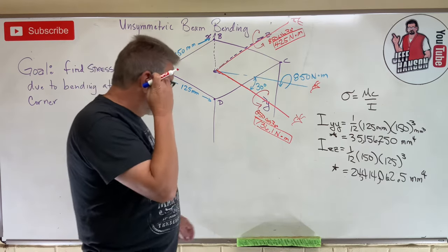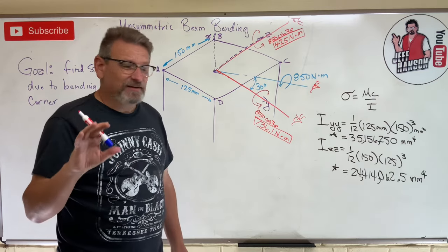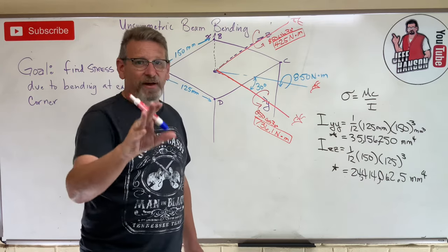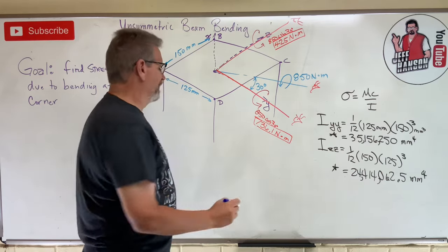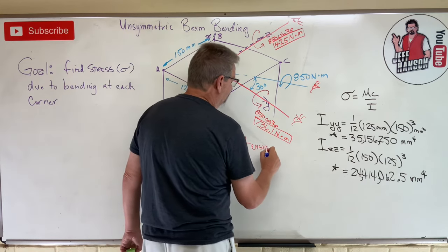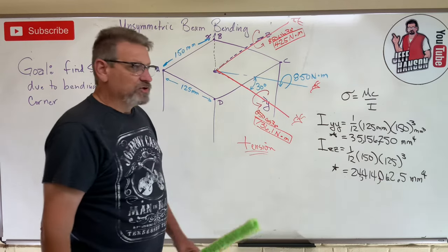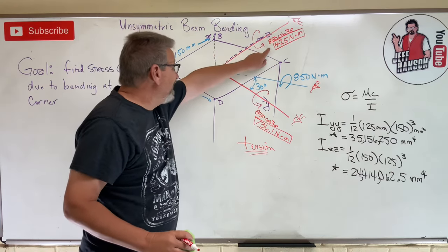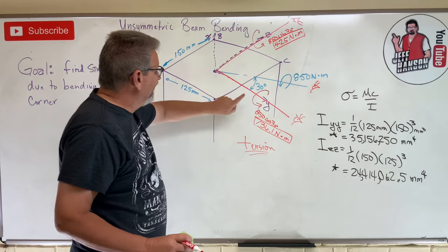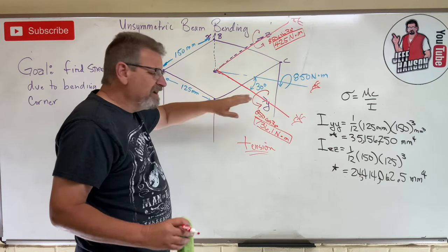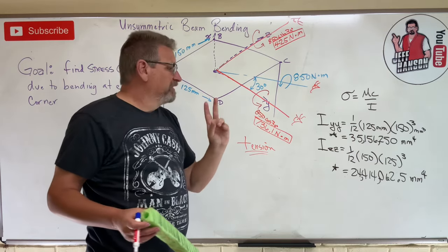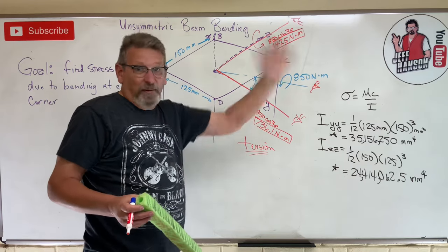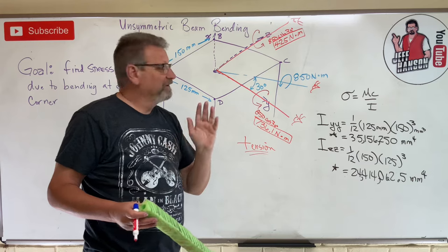Let's talk about what these things are doing. When stress is in compression, it's a negative value. When stress is in tension, it's a positive value — what does the word tension start with? A positive sign. That's how you can remember that. So at each corner, we calculate the stress from the Y-bending and the stress from the Z-bending. Some corners will be both positive and add together; some will be both negative; and some will have one positive and one negative component.